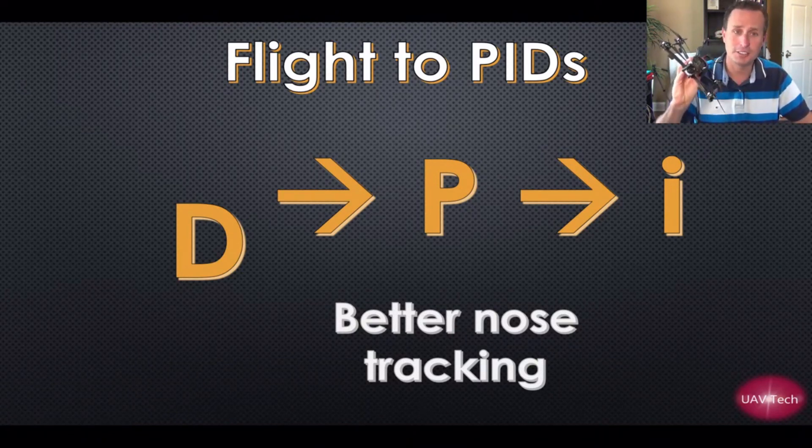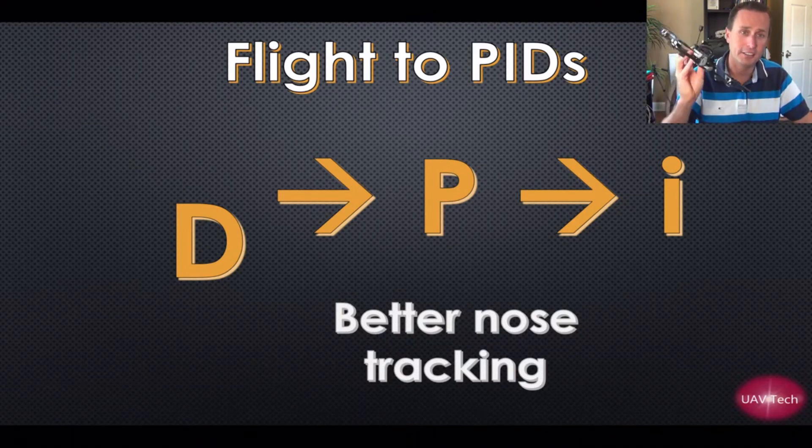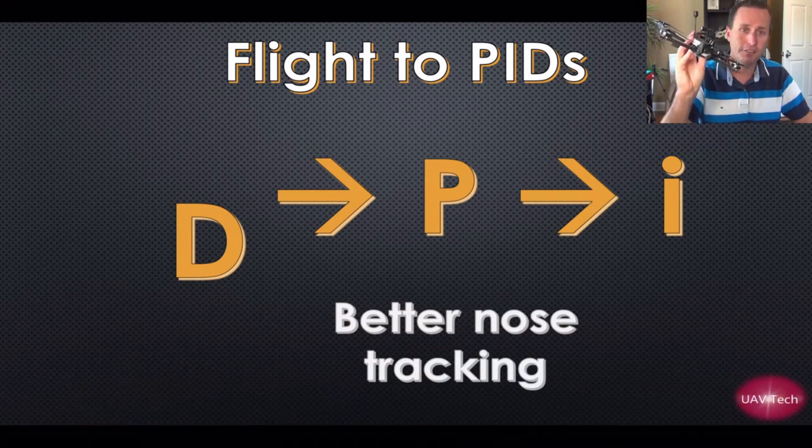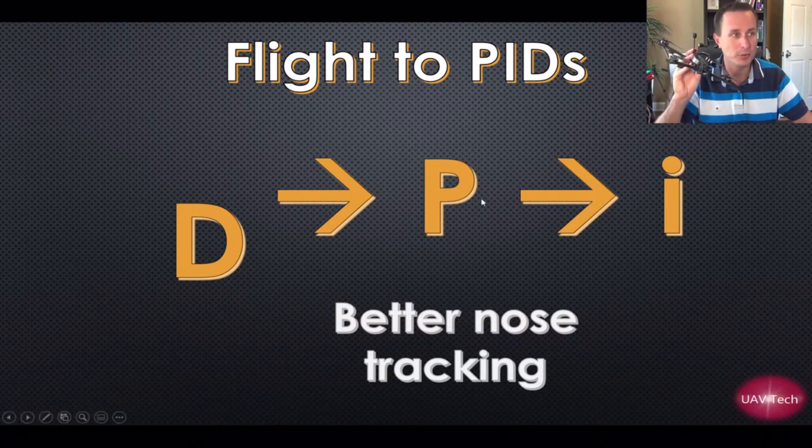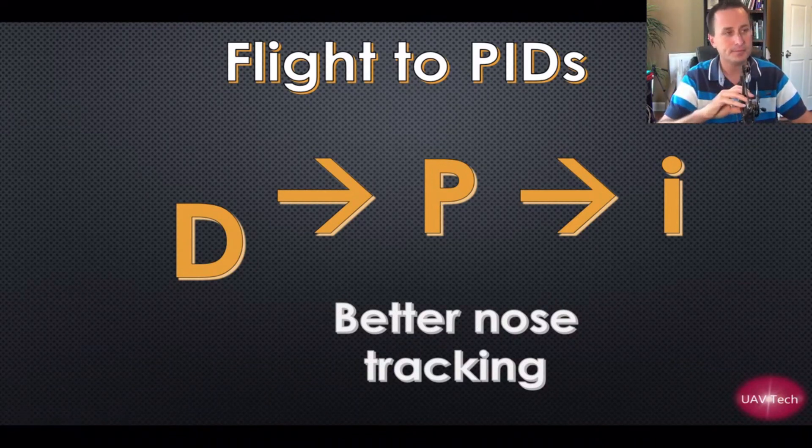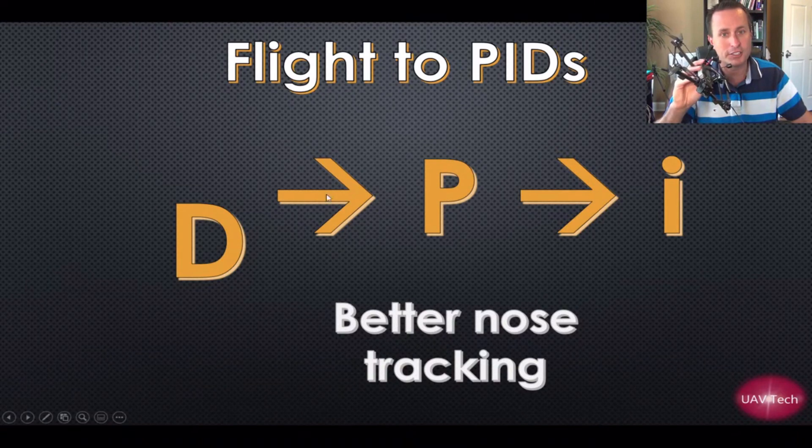Or if you're in prop wash and you're getting like a jerk move when you're getting on the throttle - the nose is jerking over or jerking off course and then coming back and then you get some oscillations at the same time - you need more P term to keep that quad following and staying on your sticks. So when you adjust this arrow, this relationship, you want this term to come along at the same time.